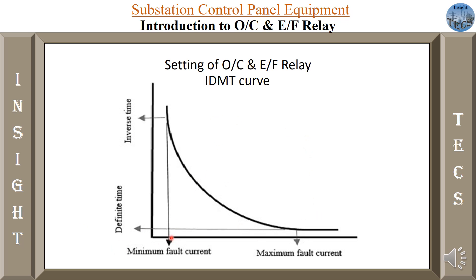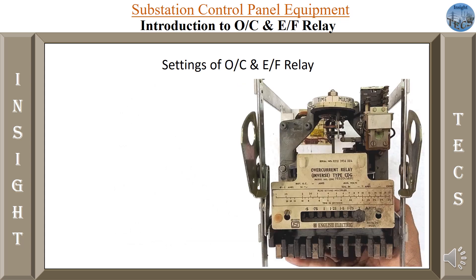When the current is minimum, the relay will give some time for fault clearing — it allows time for the fault to clear itself. If it is a high current surge, it may be a mal-operation if it operates instantly. So it gives some definite time for the relay to operate. When minimum fault current flows, more time is required; when maximum fault current flows, the time to operate will be less. Based on this concept, the settings of over current and earth fault relay are done.